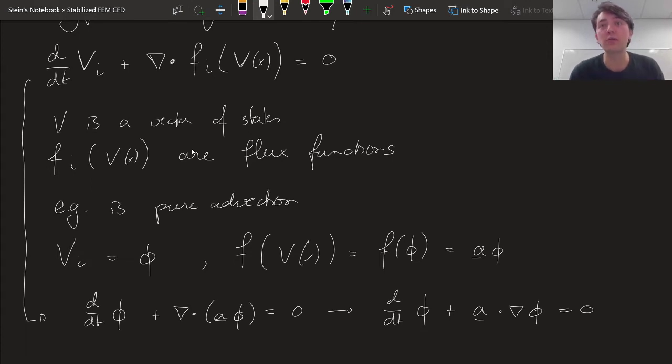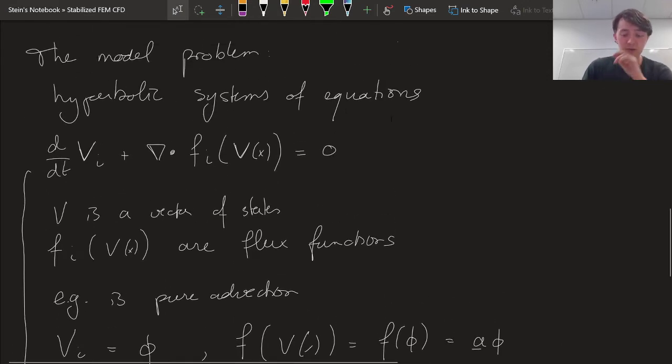f may be nonlinear, for example for the Euler equation, it may be a nonlinear function of the states itself. It may be linear, like pure advection.